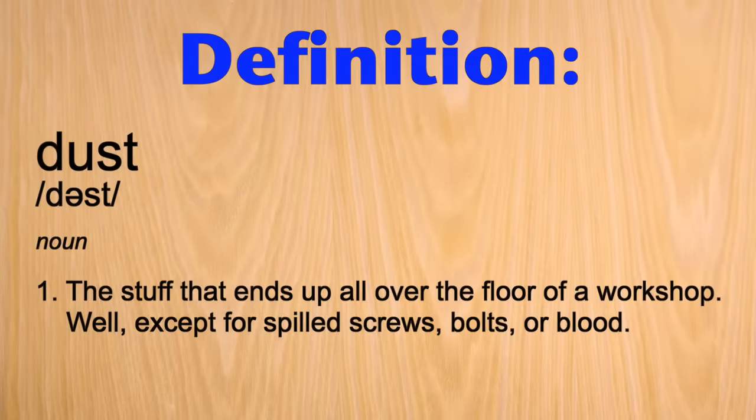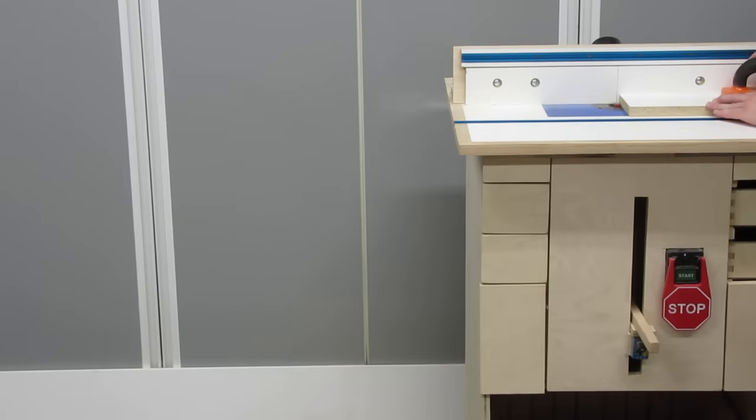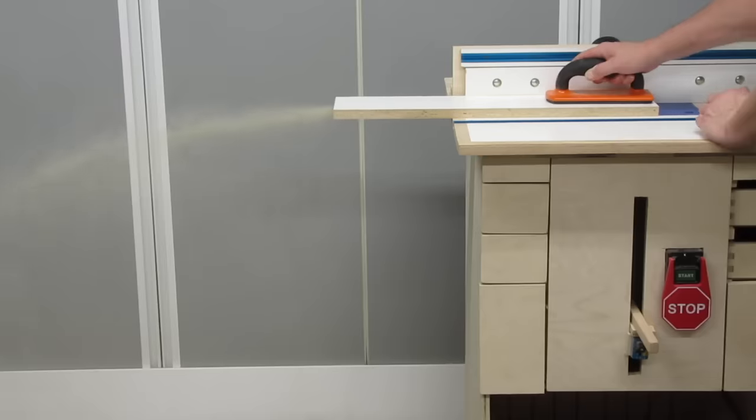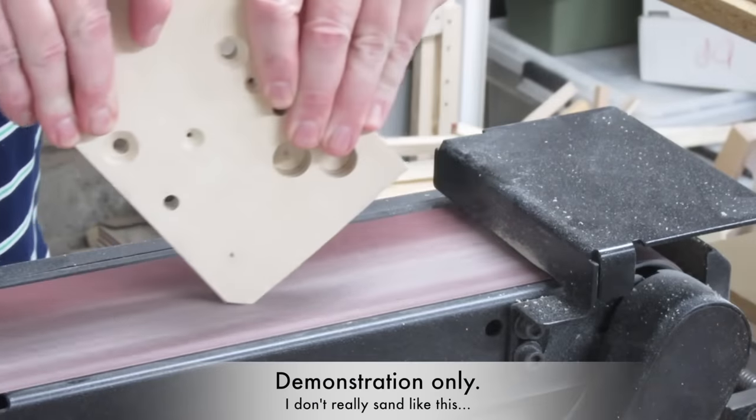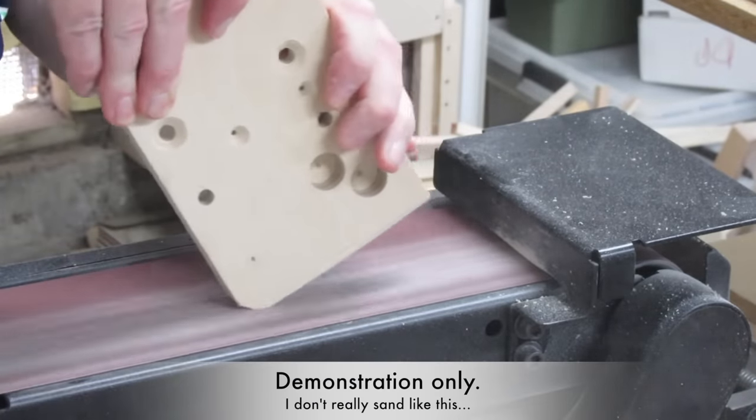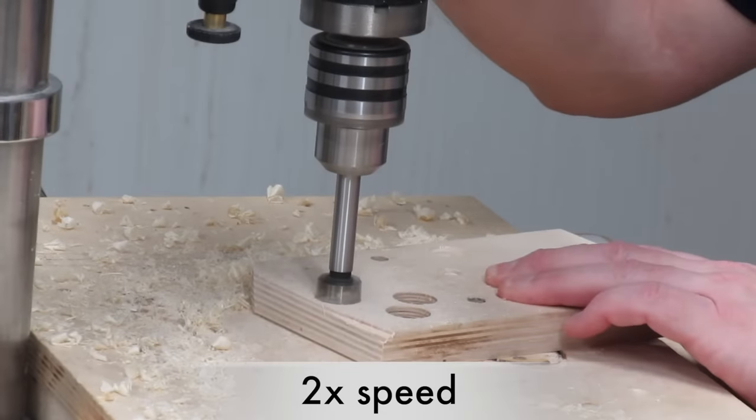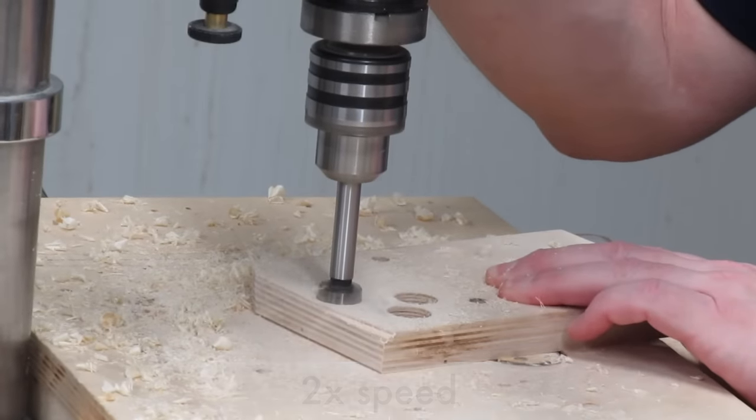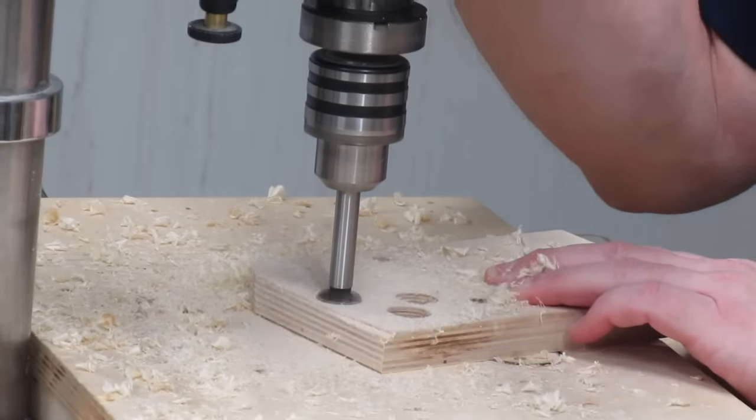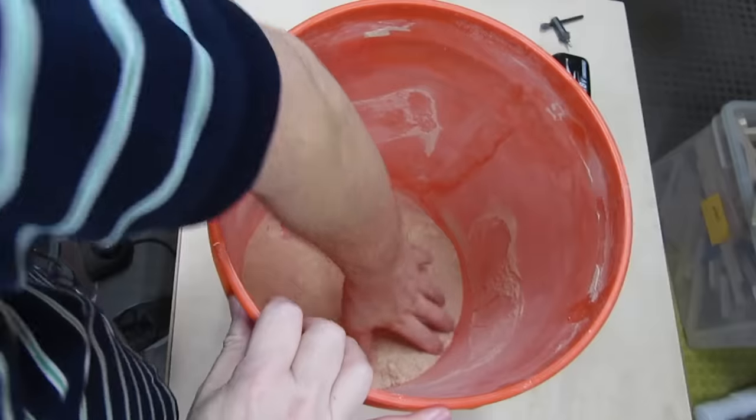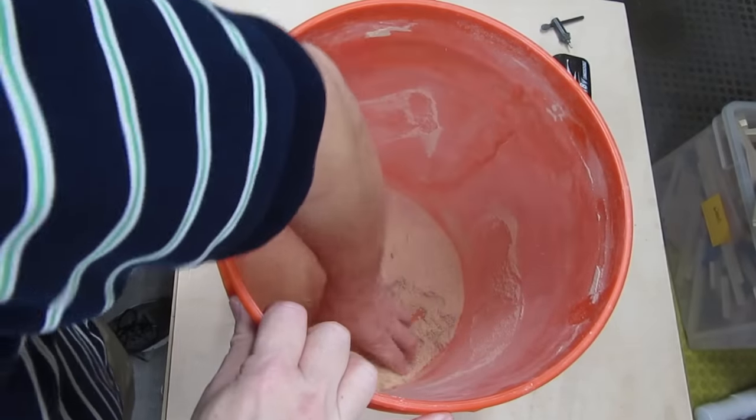Chances are, since you're watching this video, you already know what we mean by the word dust. But just so we're on the same page, we're talking about the sawdust created when we cut wood using something like a router or a table saw, or the fine dust created when we sand wood, or even the shavings created by drilling wood. The goal of a dust collection system is to grab all these types of dust and collect them in a receptacle so they don't end up all over the floor. And we might actually live longer if we're not breathing in all that dust in the air.